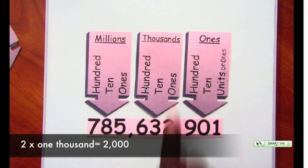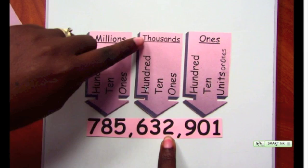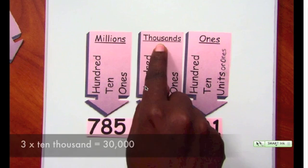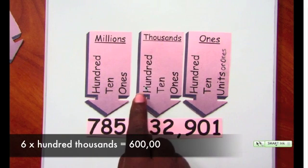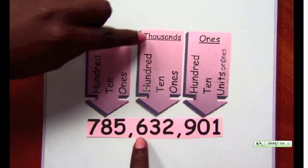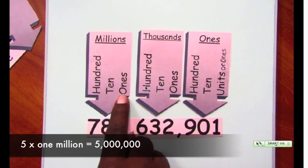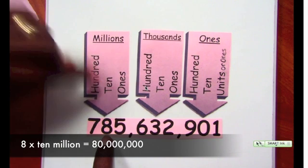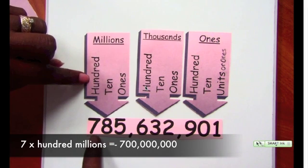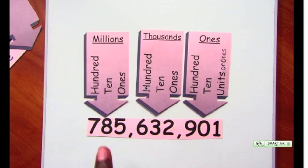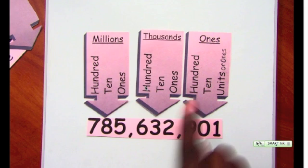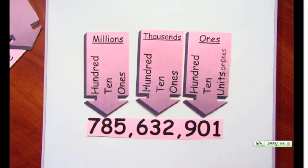We can follow the same pattern all the way up to the hundred millions place. 2 times 1 gives us 2,000. 3 times 10 is 30,000. 6 times 100 gives us 600,000. 5 times 1 gives us 5 million. 8 times 10 is 80 million. 7 times 100 is 700 million. So the periods are very important — each has three places: 1s, 10s, and 100s.